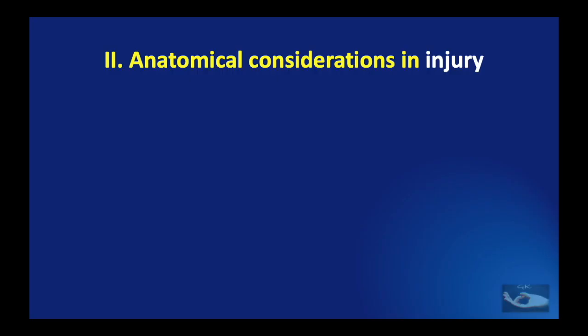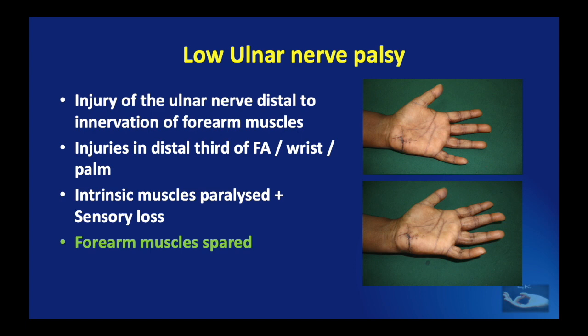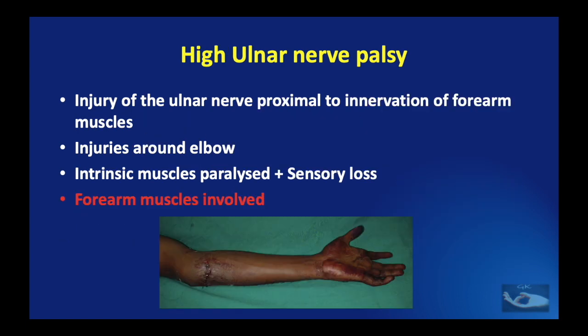When there is an injury to the ulnar nerve distal to the innervation of the forearm muscles, it is known as low ulnar nerve palsy, occurring in injuries at the distal third of the forearm, wrist, or palm. Here the intrinsic muscles are paralyzed and there is sensory loss on the hand, while the forearm muscles are typically spared. Injury proximal to the innervation of the forearm muscles is known as high ulnar nerve palsy, usually involving injuries around the elbow. Here the intrinsic muscles are paralyzed, there is sensory loss on the dorsum of the hand and the ring and little fingers, and the forearm muscles are paralyzed as well.